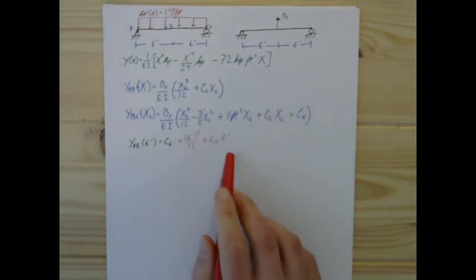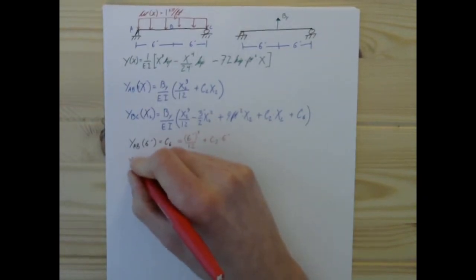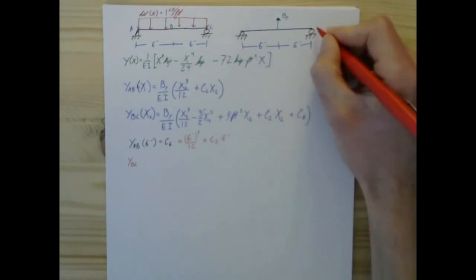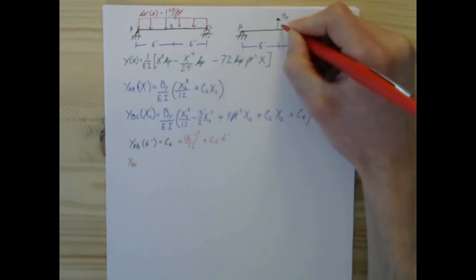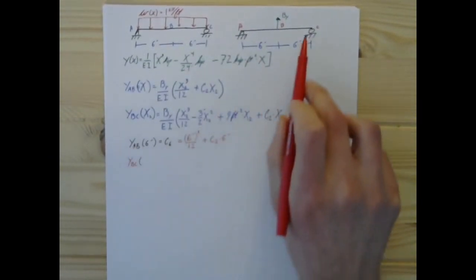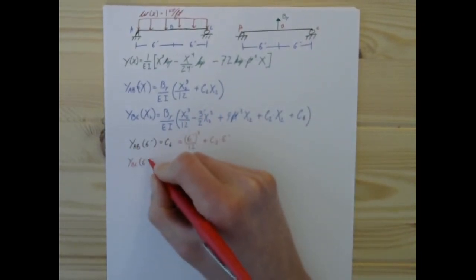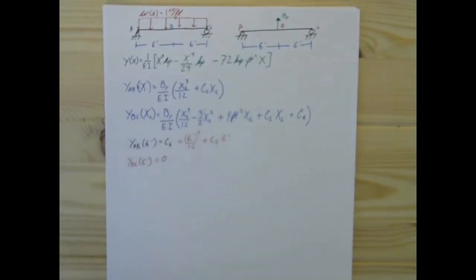So, from here, we're finding that we've got just one constant of integration left that we need to determine. Fortunately, we have one boundary condition left that we need to work with, and that is that at point C, the deflection at BC of 6 feet, that has to be zero.